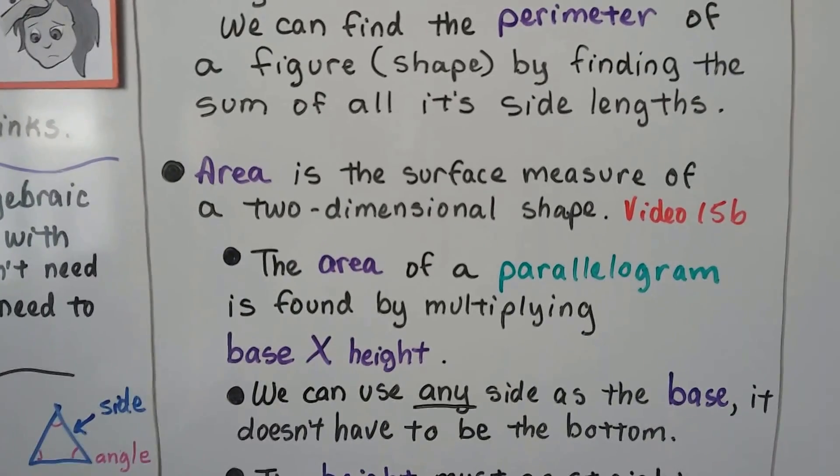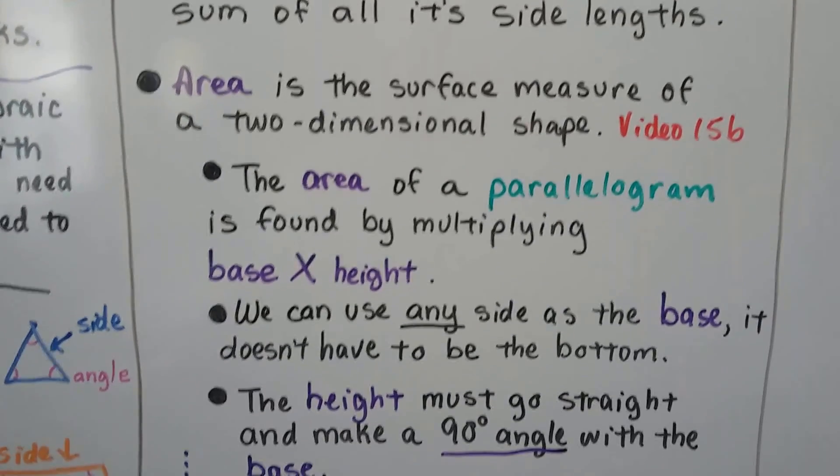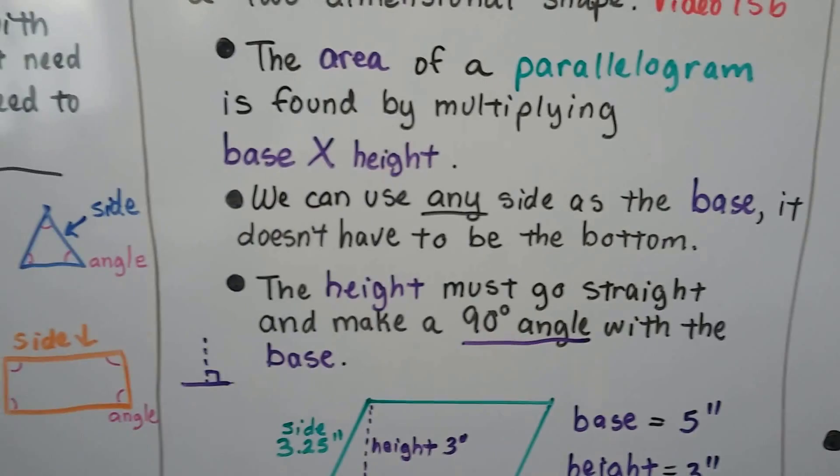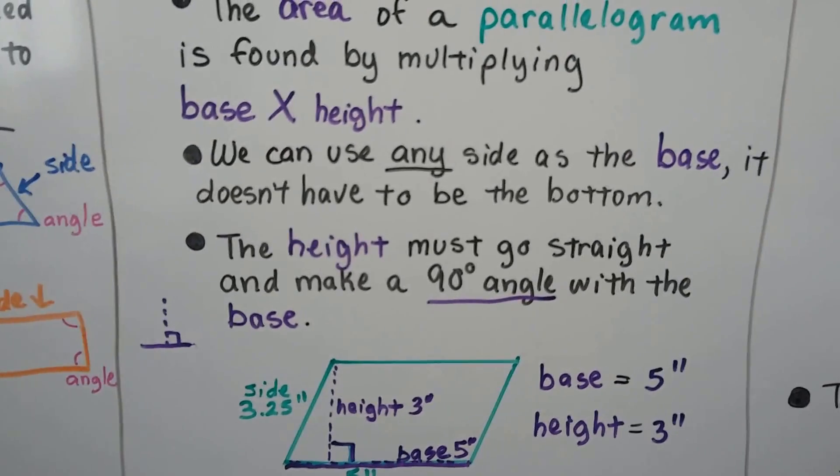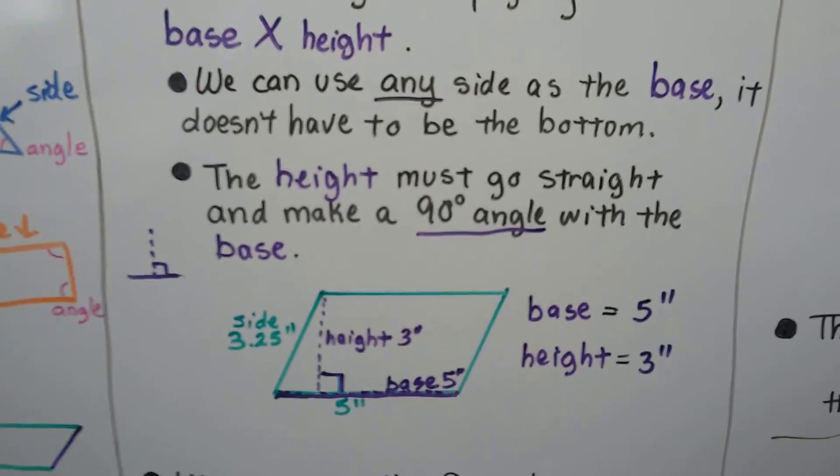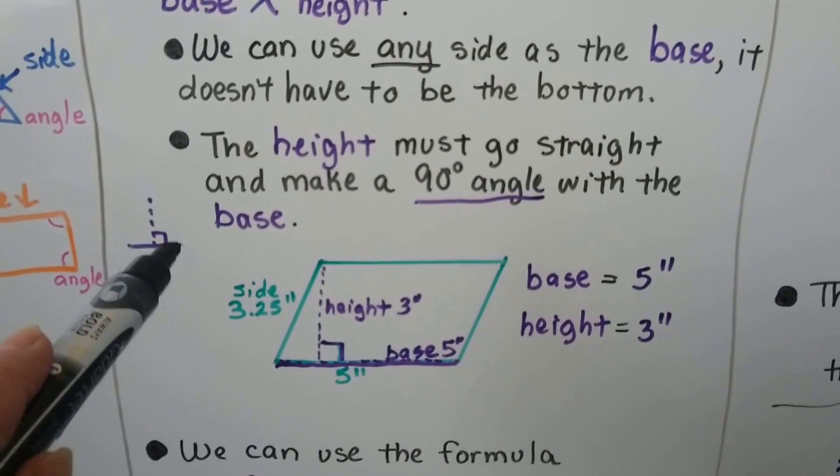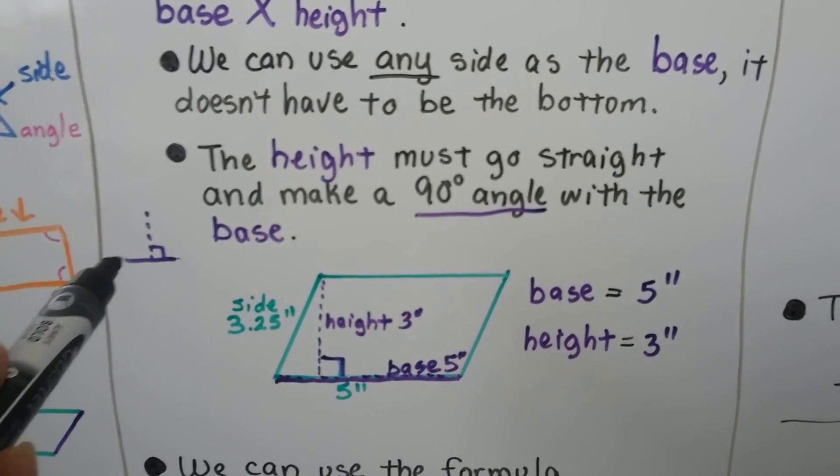Area is the surface measure of a two-dimensional shape. It's the inside. The area of a parallelogram is found by multiplying base times height. It's similar to length times width, but it's different because it's leaning. We can use any side as a base. It doesn't have to be the bottom. The height must go straight and make a 90 degree angle with the base. It's going to make a perpendicular line.